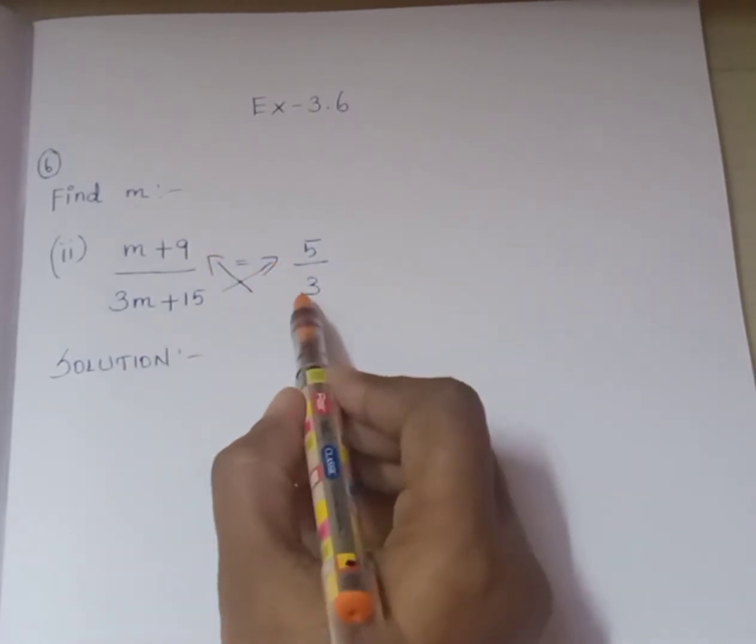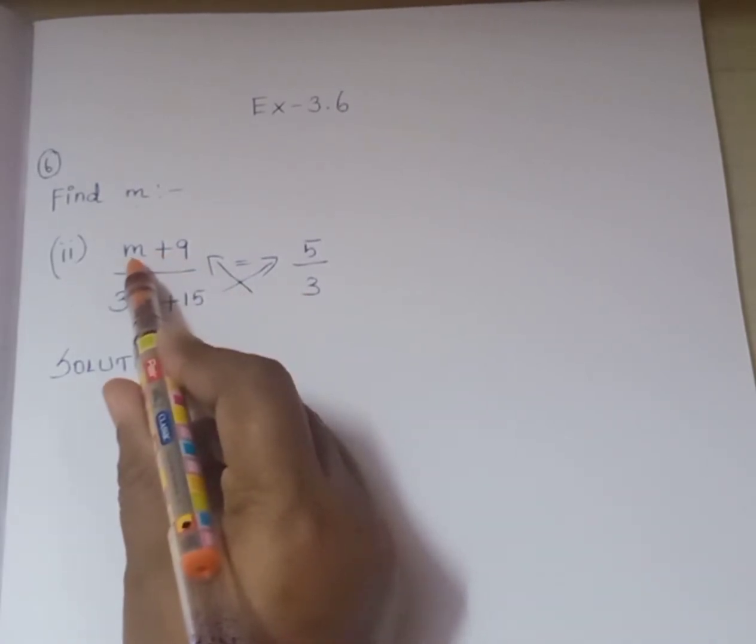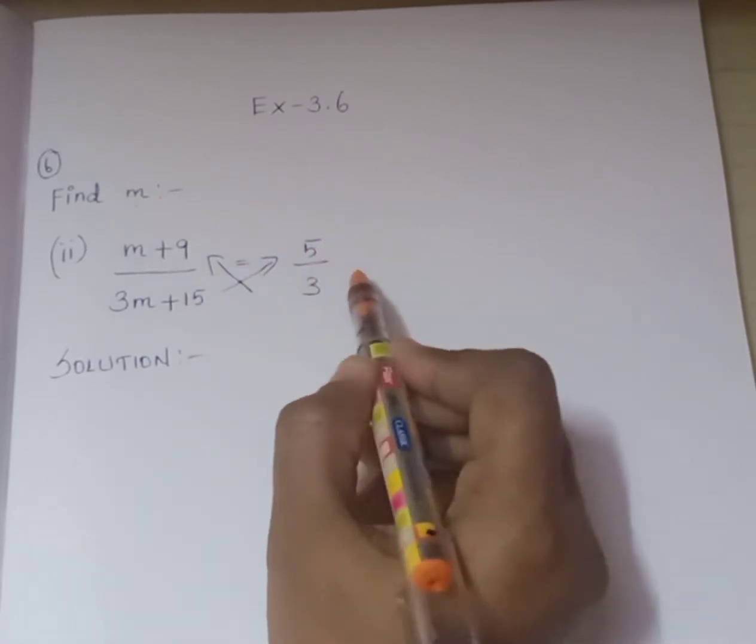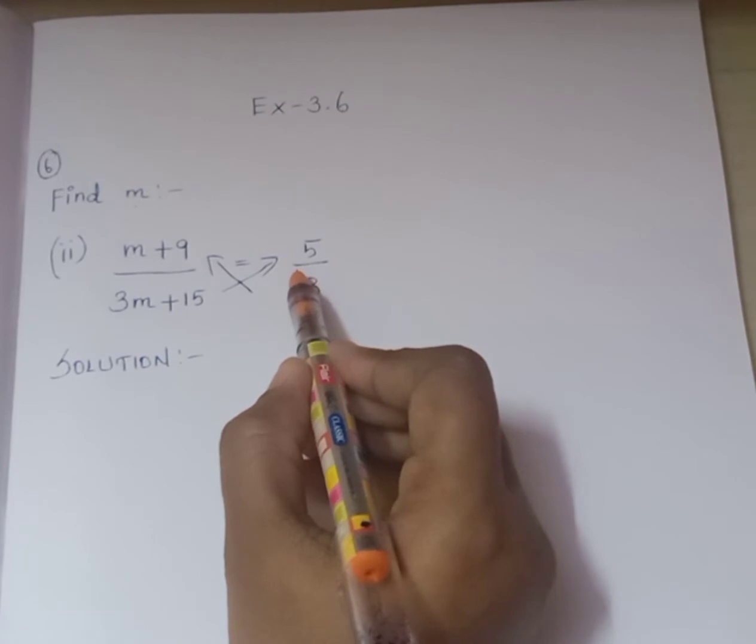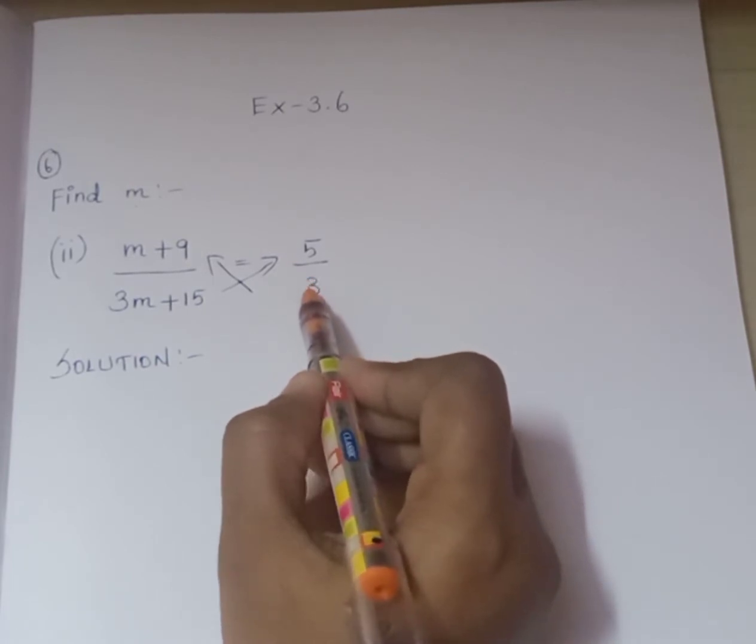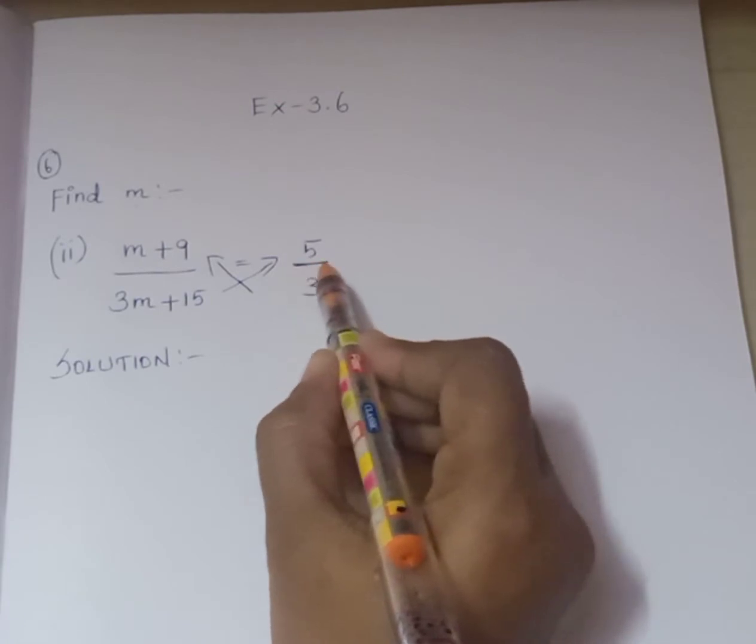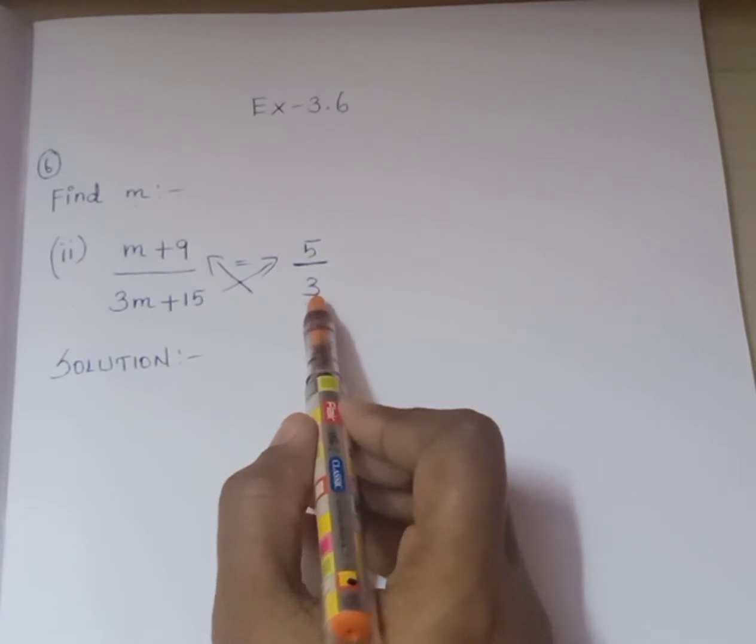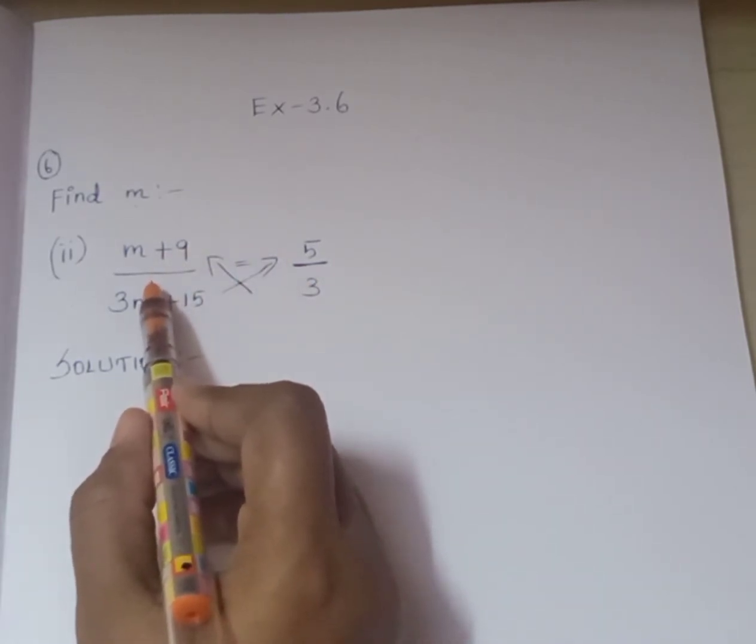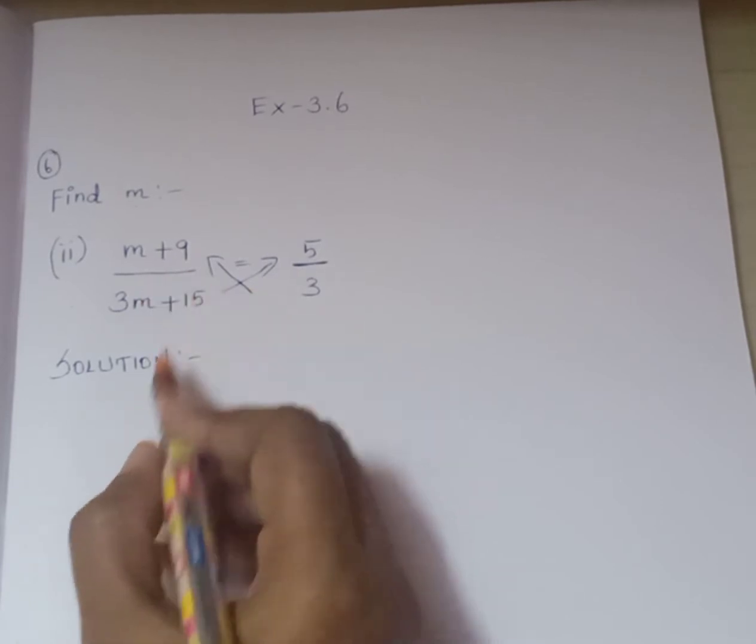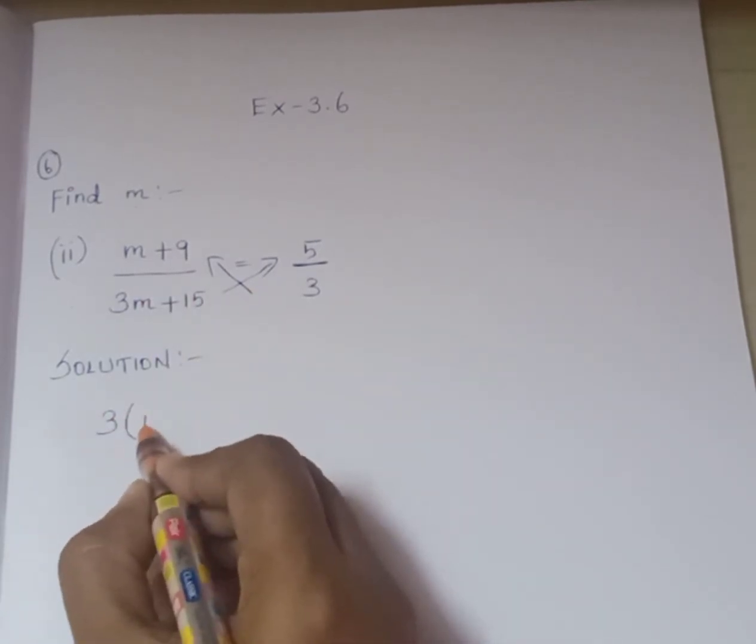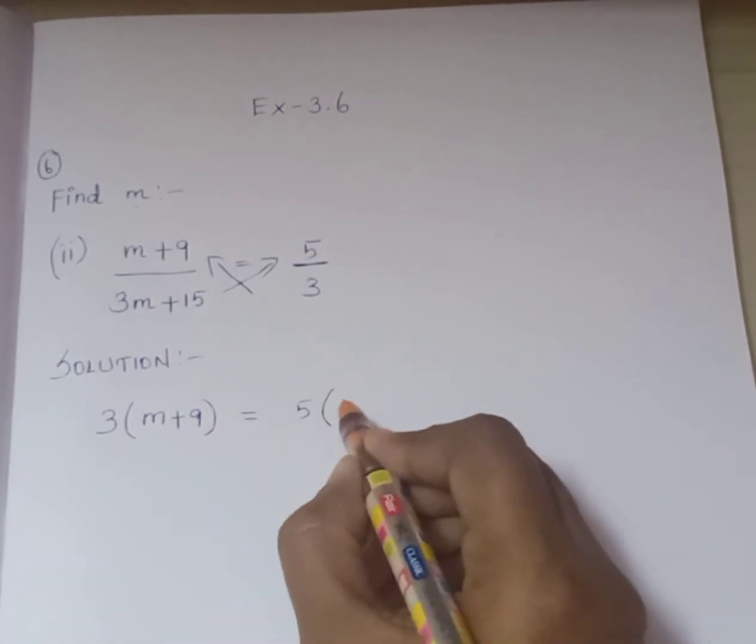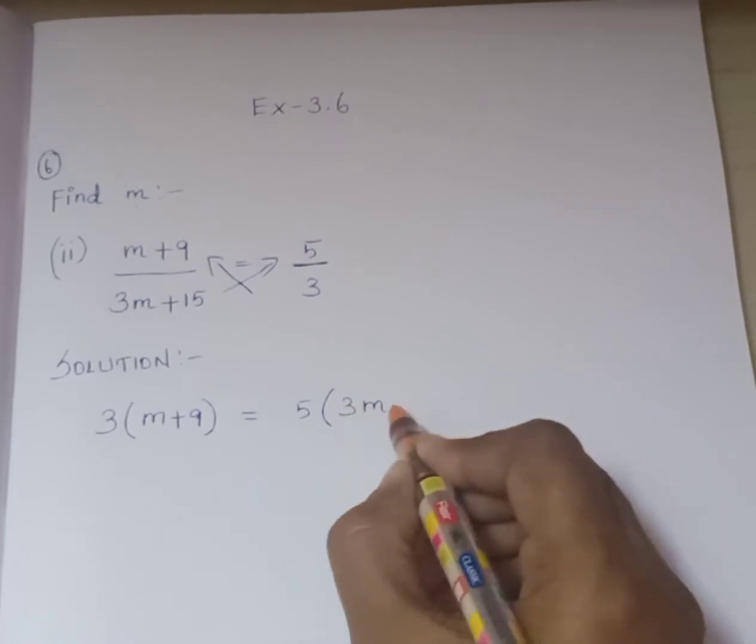So I am going to do cross multiplication. So 3 times (m+9) is equal to 5 times (3m+15). Why? It is changing to multiplication because it is connected with the division symbol. So the division symbol, when you are taking it to another side, will be changing to multiplication.